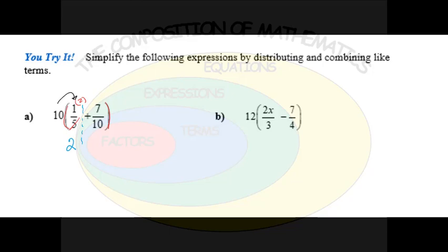Now we need to distribute the 10 to the next term. In this case the 10s cancel leaving just a factor of 1 — the 10 over 10 cancels — so 7 times 1 is 7. So we get 2 plus 7 which is 9.